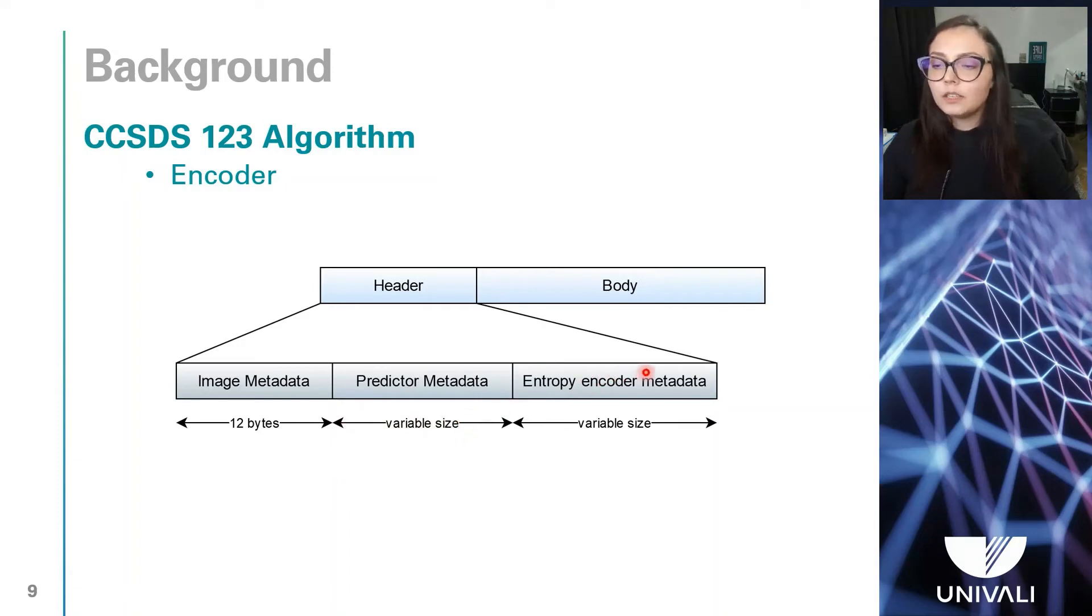Finally, the entropy encoder metadata also has a variable size, and it contains the parameters that are used by the encoder, which can have two different adapted approaches, for the samples and for the blocks. In this case, the type of approach will influence the size and the necessary information concerning the encoder, besides influencing the compression itself. This process is done by using the encoder to assemble the package body.